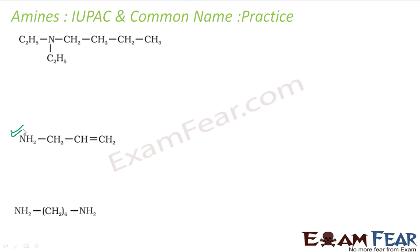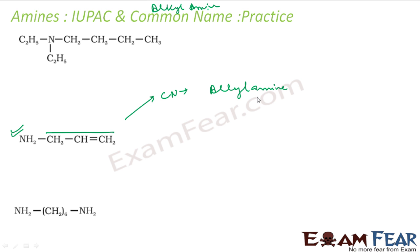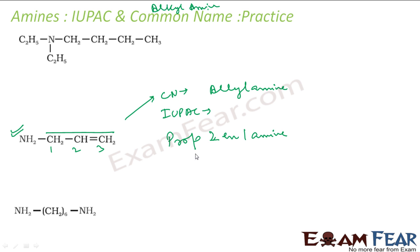Let us take this next compound and write the common name first. The common name is always of the form alkyl amine. The alkyl group here is an allyl group, so it will be allylamine — that is the common name. For the IUPAC name, number it from the end attached to nitrogen: it is a 3-carbon chain — prop- — with a double bond at position 2, so 2-en-, and amine at position 1, giving prop-2-en-amine. Position 1 is not even required to be stated explicitly.